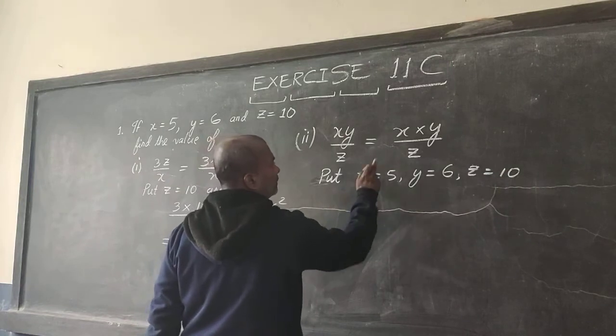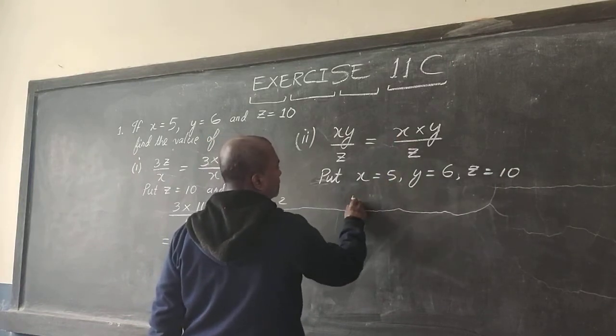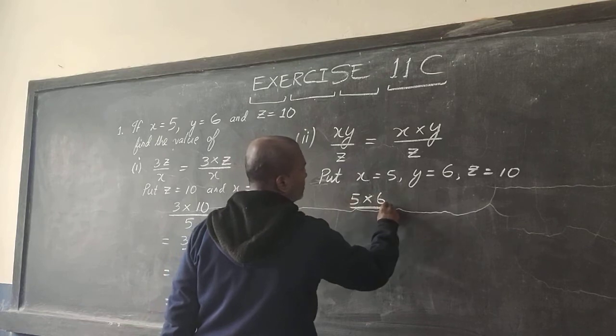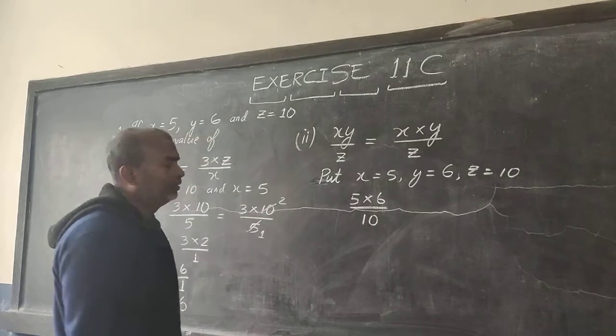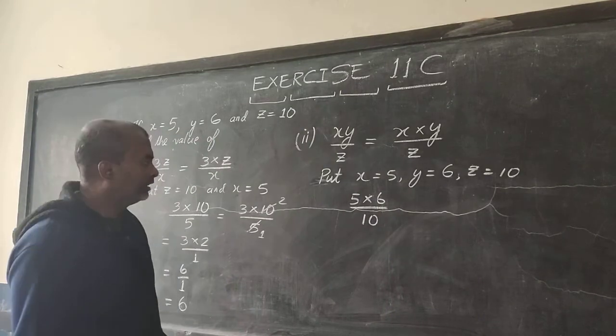So we will get X into Y, that is 5 into 6, divided by Z is 10, divided by 10. I hope you understand this.